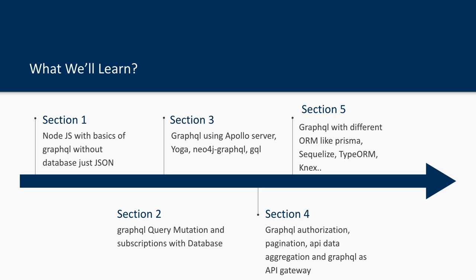I'm also covering a related playlist on ORM and object-relational mapping, covering multiple libraries: SQLize, TypeORM, Knex ORM, and Prisma. Going through that playlist will help you understand how to expose data through GraphQL queries and mutations. That ORM playlist focuses on fetching data from different databases using different ORMs purely via REST — the difference here is we are using GraphQL.